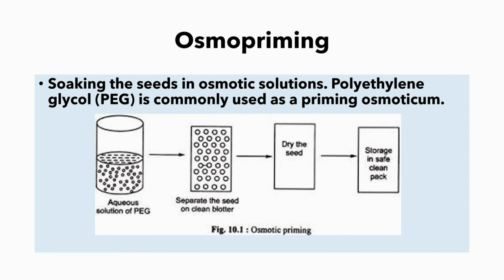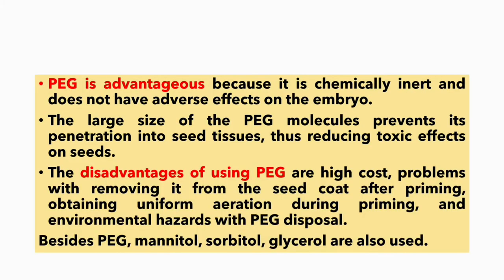The first type of priming is osmo priming — soaking the seeds in osmotic solutions like polyethylene glycol (PEG). PEG is commonly used as a priming osmoticum. Polyethylene glycol is advantageous because it is commonly inert and does not have any adverse effect on the embryo. The large size of PEG molecules prevents its penetration into seed tissues, thus reducing toxic effects on seeds. Disadvantages include high cost, problems with removing it from the seed coat after priming, obtaining uniform aeration during priming, and environmental hazards with PEG disposal. Besides PEG, mannitol, sorbitol, and glycerol are also used.